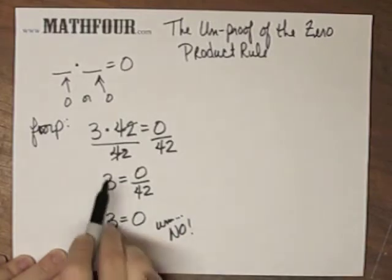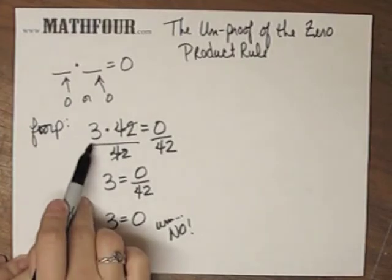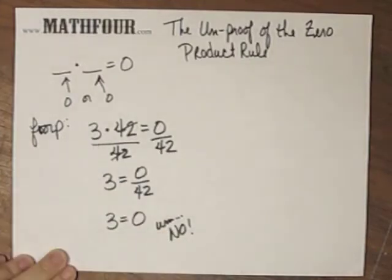So if 3 is not equal to zero, then this can't be equal. So this can't be equal. We could play the same game by dividing by 3. Well, 42 is not equal to zero either,